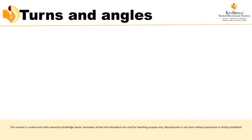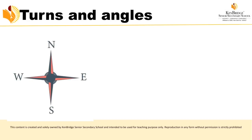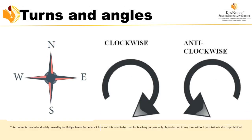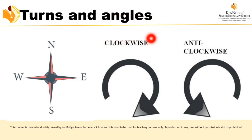Now we see turns and angles. You should know directions: north is up, south is down, east is right, and west is left. Before doing turns, you should know two terms: clockwise means turning in the direction a clock moves, and anti-clockwise means turning in the opposite direction.